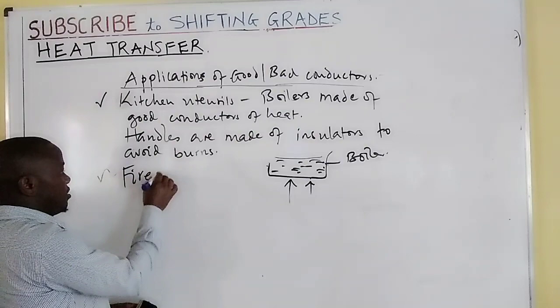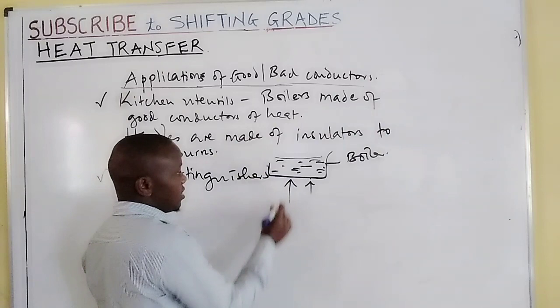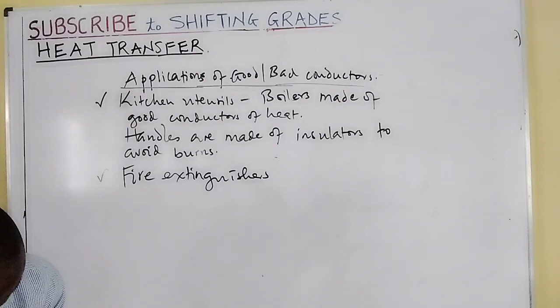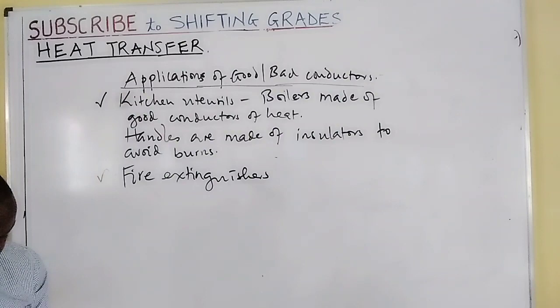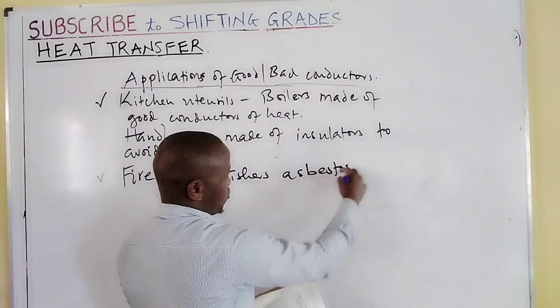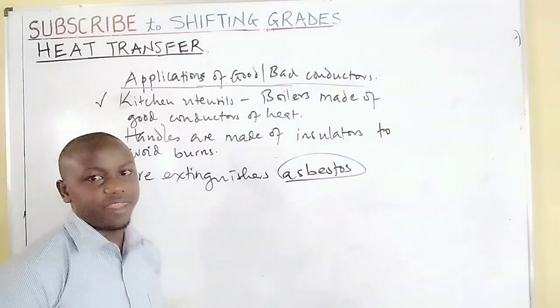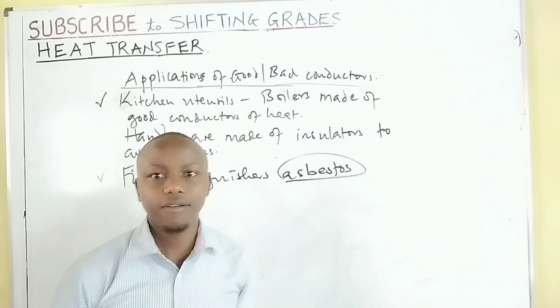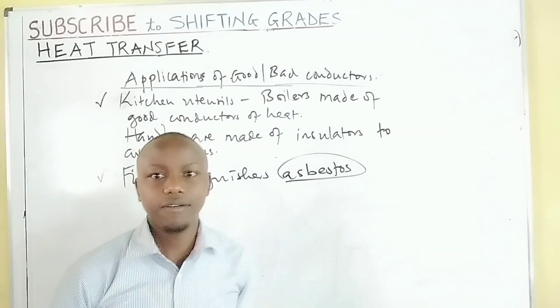Some other applications include fire extinguishers. Firefighters have their suits made of materials used for lagging — in water pipes and boilers — such as asbestos, which is a very good insulator. So firefighters wear them whenever they are putting out fires, so that as they operate, this material which they are wearing will not allow heat to be conducted into their body. Therefore, for safety measures, they wear clothes made of asbestos.